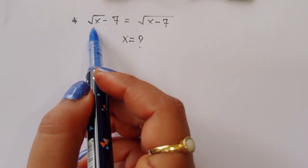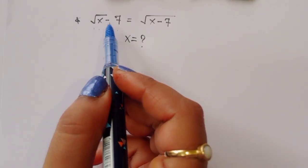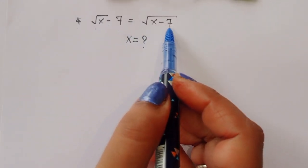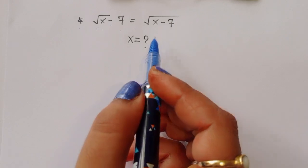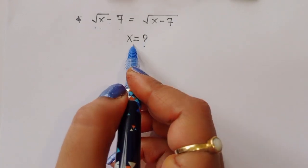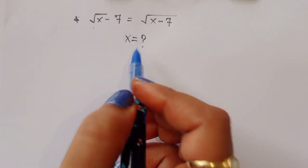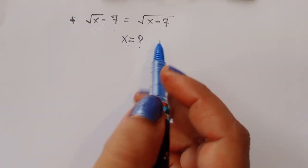The question is: square root of (x minus 7) is equal to square root of x minus 7. We have to find out the value of x. Let's see the solution.